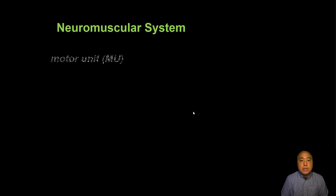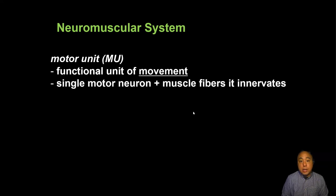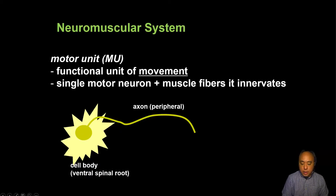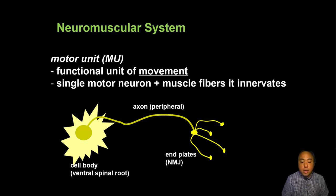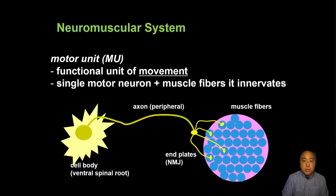The motor unit is the functional unit of movement, of joint movement. It is made up of a cell body, otherwise known as a motor neuron, as well as an axon. This is through the peripheral nervous system that terminates at the neuromuscular junctions or end plates, which innervate or interact with the muscle fibers in the individual muscles themselves. This is one motor unit.